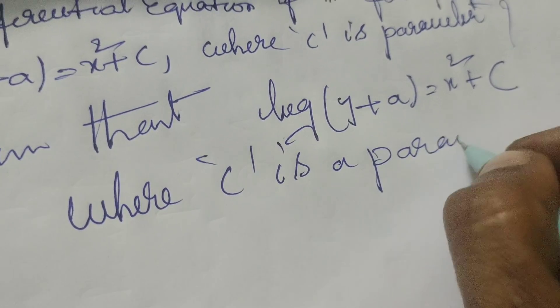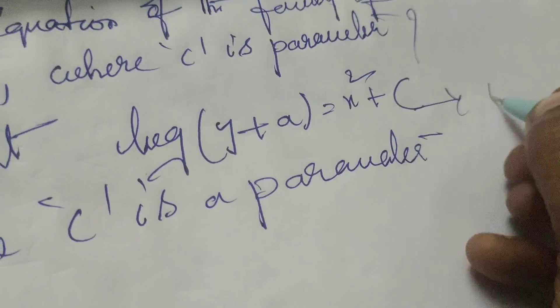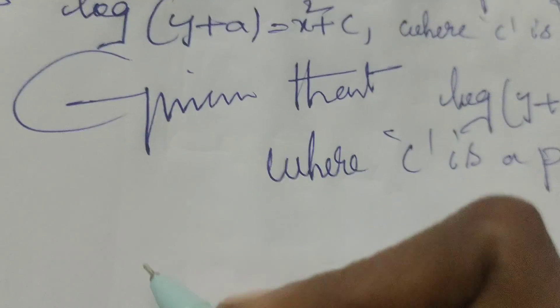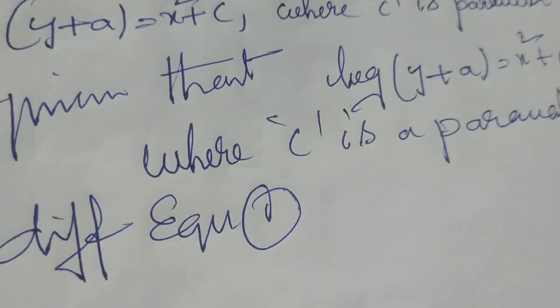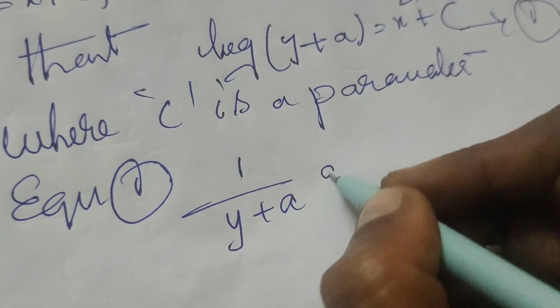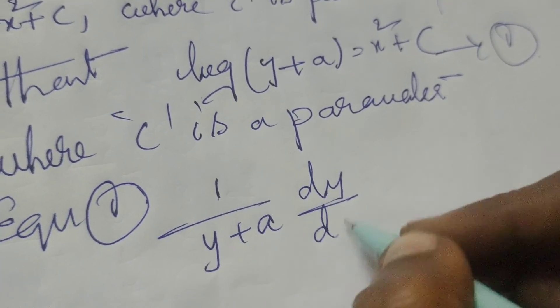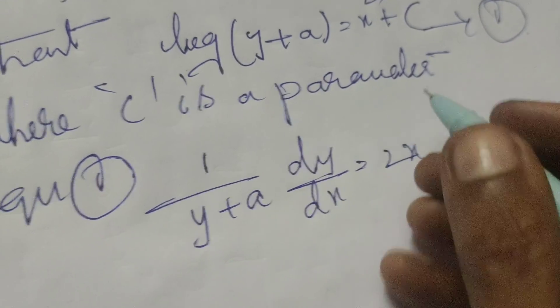Now, differentiating the given equation, assuming this is equation number 1. Differentiating equation 1: 1/(y+a) dy/dx = 2x. Here, x² differentiates to 2x, and c is a constant.